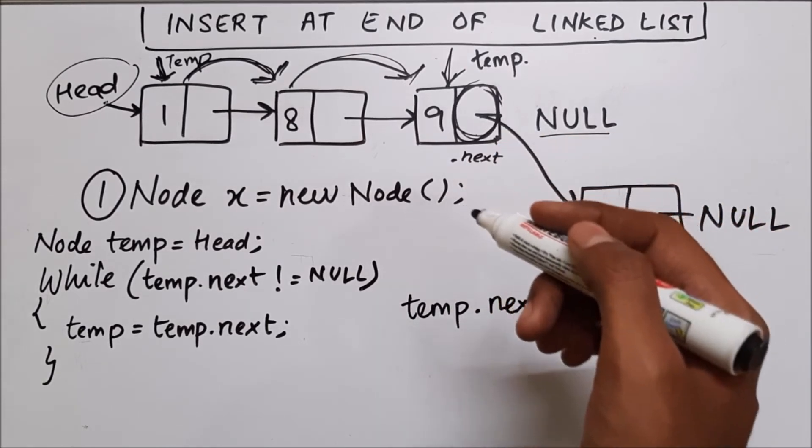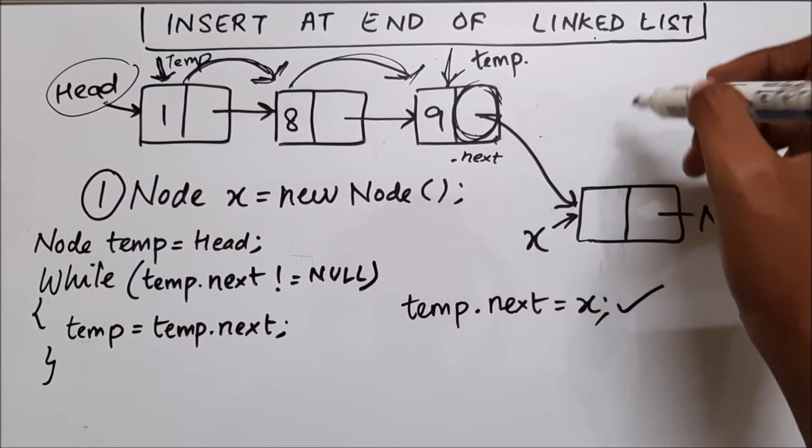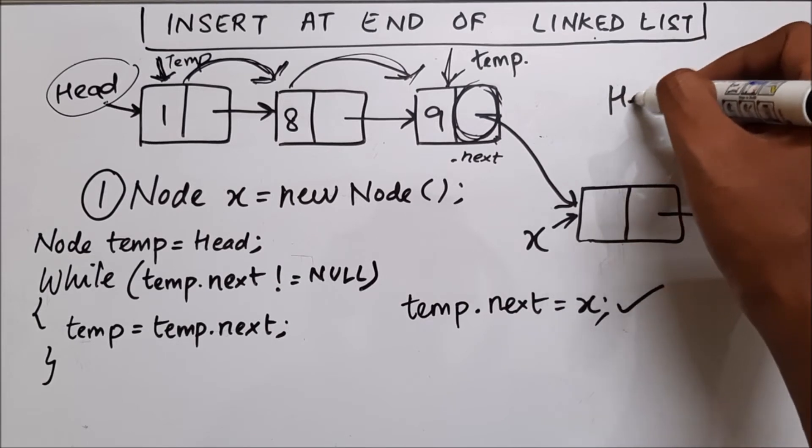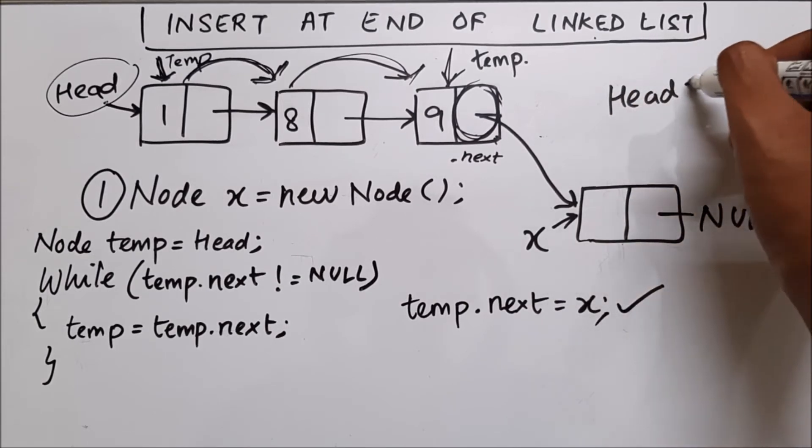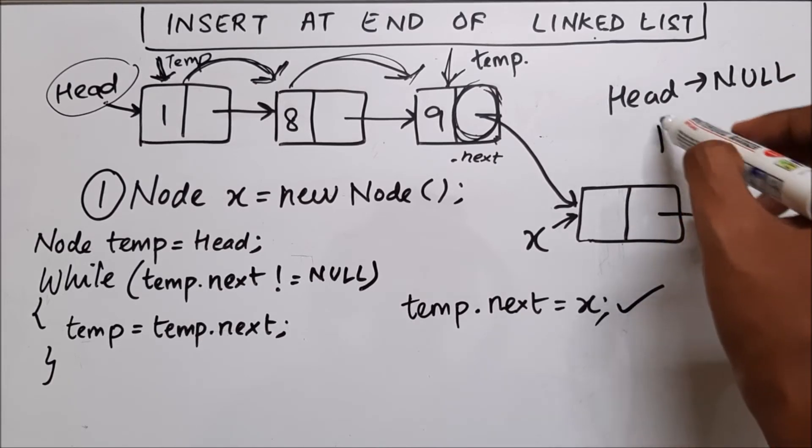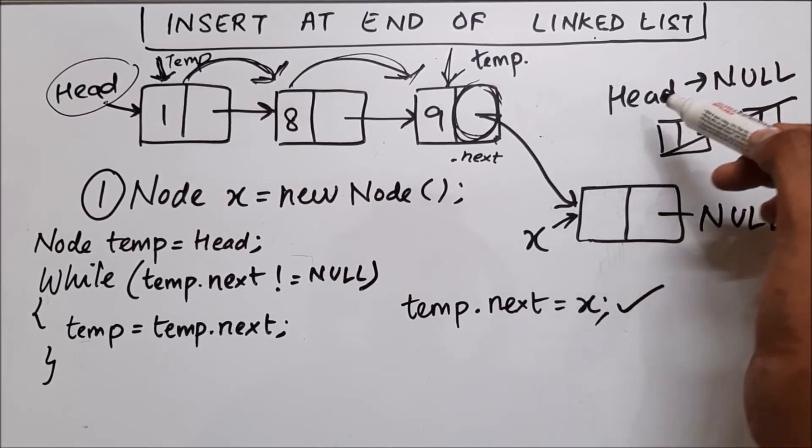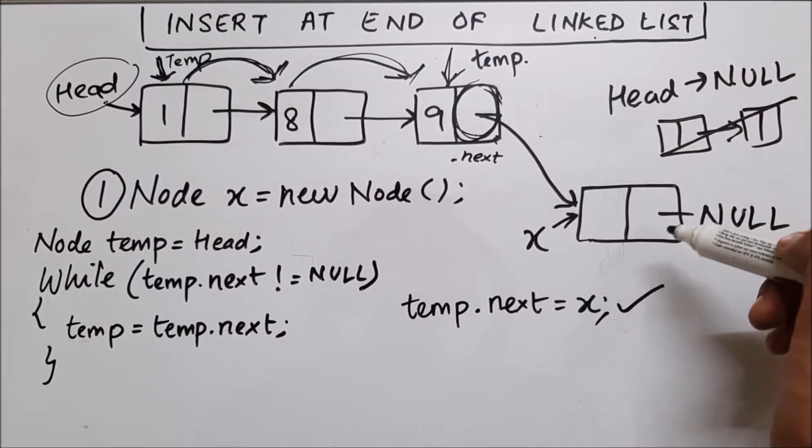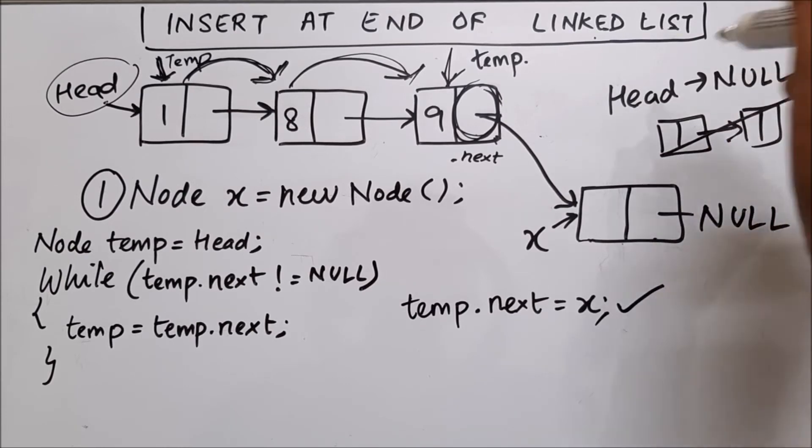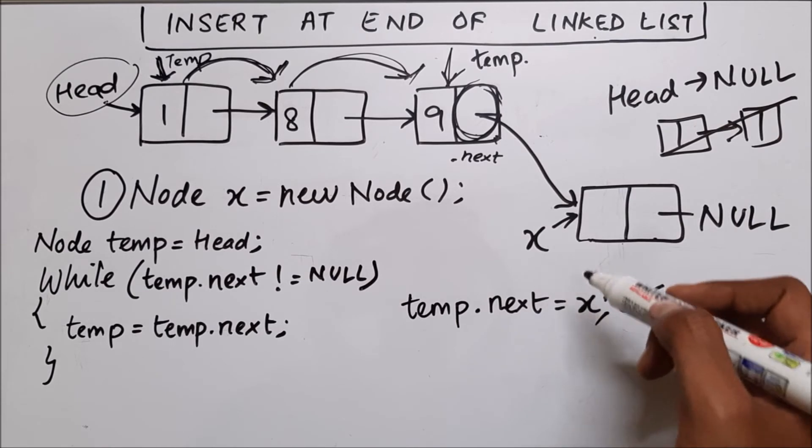Let's say we have a linked list which is empty. So head is pointing to null. What I mean is there is no node inside this linked list. Nothing is present in this linked list. In that case, how you will add a node in a linked list which is empty? So you just use one if condition.